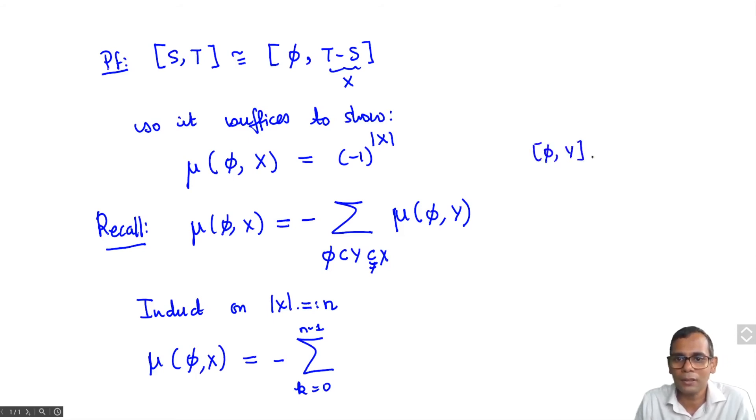But how many subsets of size k are there? There are n choose k subsets of size k, and by induction hypothesis we have that this Mobius function is just (-1)^k, raised to the cardinality of Y, which is k.